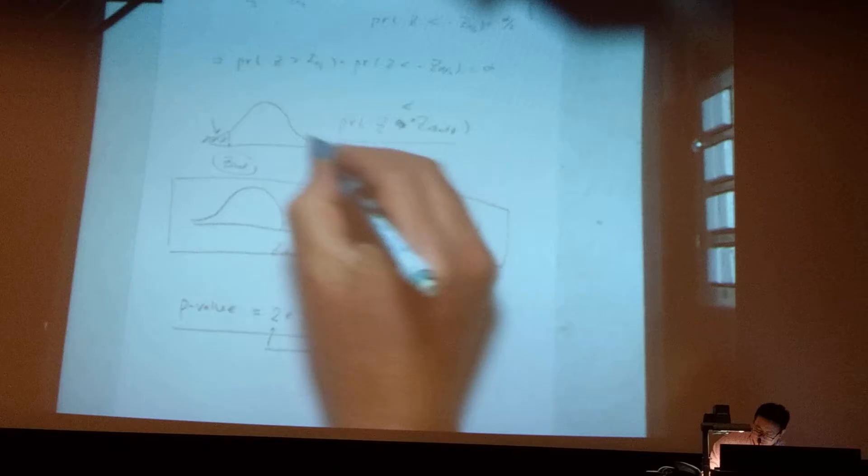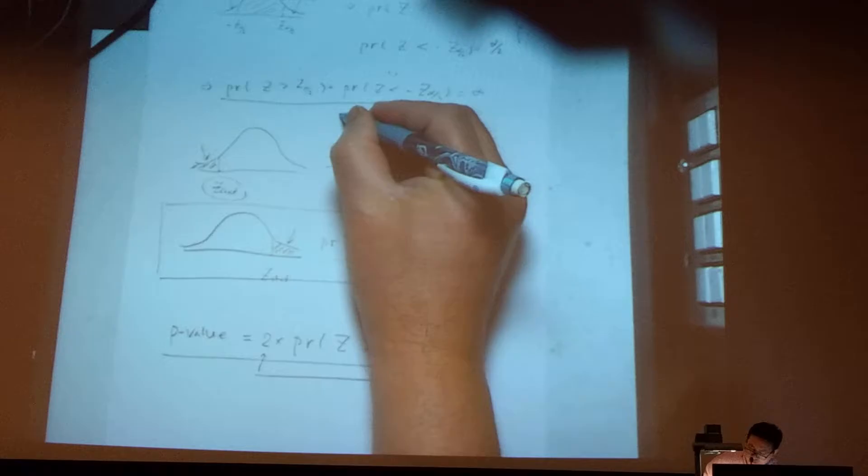P-value. This is the point as two times the probability for Z bigger than that. Test statistics.